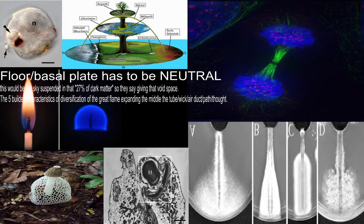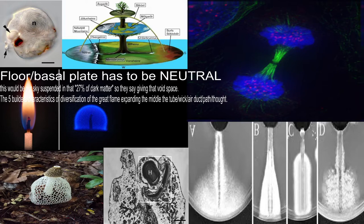The basal plate would be the tree, the basal plate would be the wick of the candle, the basal plate would be the tree in the Norse cosmology — the basal tree. It would be those green parts of the explosion, and that meiosis picture in the right corner. I'm going to explain the bottom right picture because that's the basal plate and the floor plate — like a piston-driven system — and I'll get into the piston in a second.